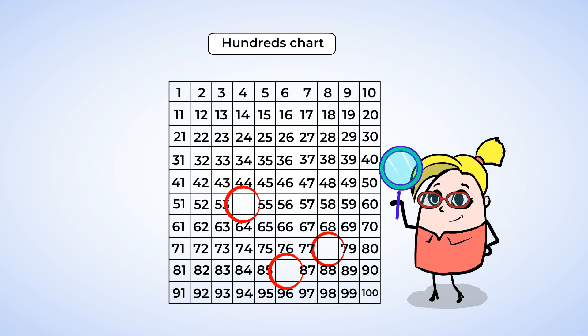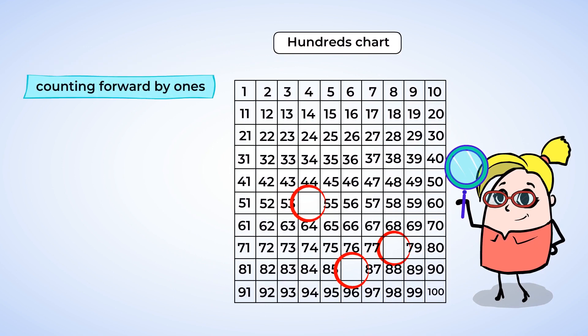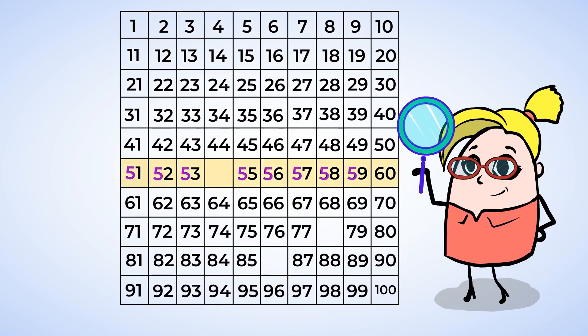One strategy we can use is counting forward by ones. If we start counting from the number 1, it might take a long time to reach this missing number all the way over here. So instead, we can just start counting from a number that is in the same row. Did you notice that the numbers in this row begin with a 5? That's because this is the 50s row. It begins with the number 51. Now let's count by ones until we reach the missing number.